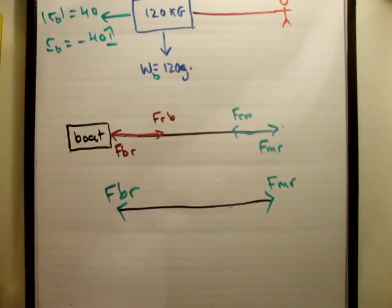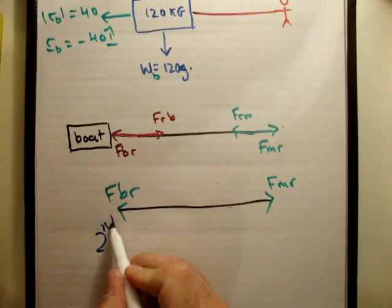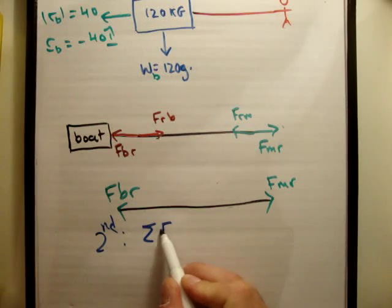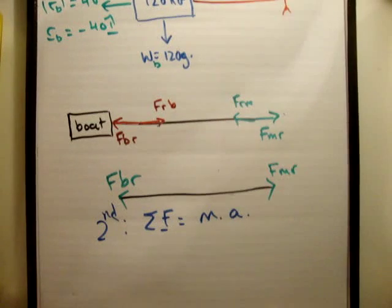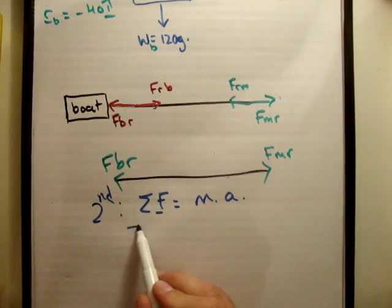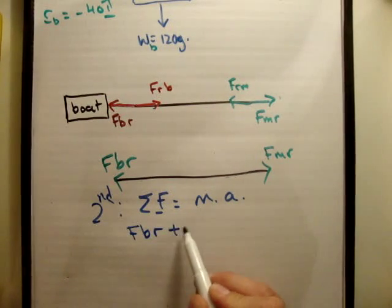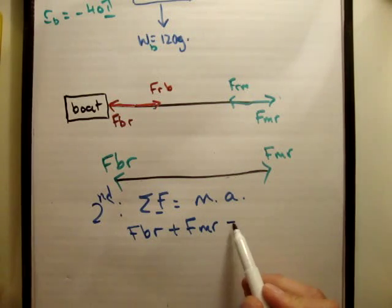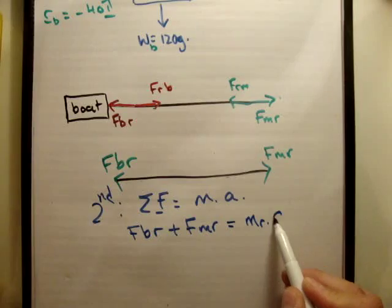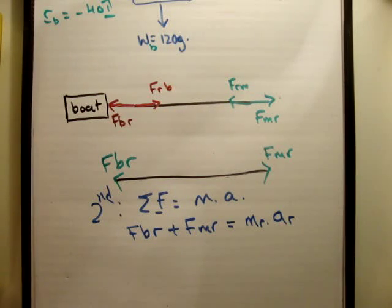We know from Newton's second law that the sum of the forces equals the mass times the acceleration. So what's the sum of the forces here? It's fbr plus fmr, mind the signs, equals the mass of the rope times the acceleration of the rope.